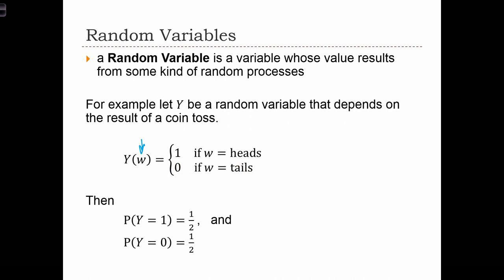In other words, we flip a coin, W is the result of the coin toss, and Y changes between 1 or 0 depending on if the coin toss was heads or tails. If that's the case, then the probability that Y will equal 1 is the same as the probability that the coin toss will be heads, and the probability is 1/2. Similarly, the probability that Y equals 0 is going to be 1/2 as well.